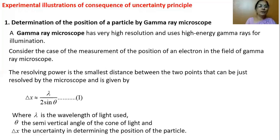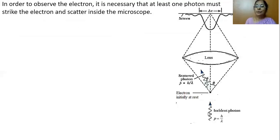Where lambda is the wavelength of the light used, theta is the semi-vertical angle of the cone of light, and delta x is the uncertainty in determining the position of the particle. In order to observe the electron which is at rest, you need to shine high energy light on it. The momentum of the photon is given as h by lambda. When this photon strikes the electron, the photon gets scattered, and the scattered photon should be collected by the lens of the microscope to determine the position of the electron.